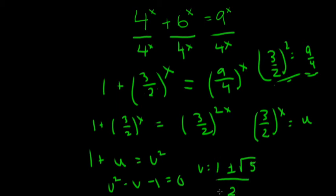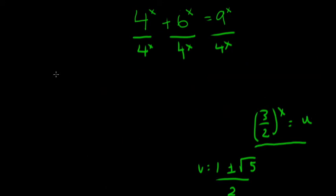Now we have to be careful, we're not done yet. We just solved for u, but we wanted to solve for x. That will be really easy once we use 3 halves to the x equals u. So all we do is set 3 halves to the x equal to what we solved for, which is 1 plus or minus the square root of 5 over 2. But we have to be careful.